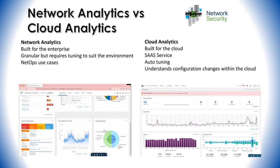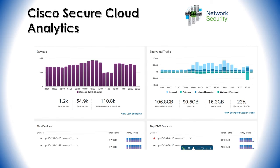The cloud solution understands changes within the cloud — this is key because it understands when a configuration change breaks something or puts the cloud at risk from a security exposure perspective, and it can send you alerts on these things. Looking at some example screenshots from Cisco dCloud: the first image on the left shows internal devices found, and on the right we see inbound and outbound traffic and which traffic is encrypted. On the bottom left are the top devices — the top talkers — and on the right we see the top DNS devices, the top DNS talkers found on the network.